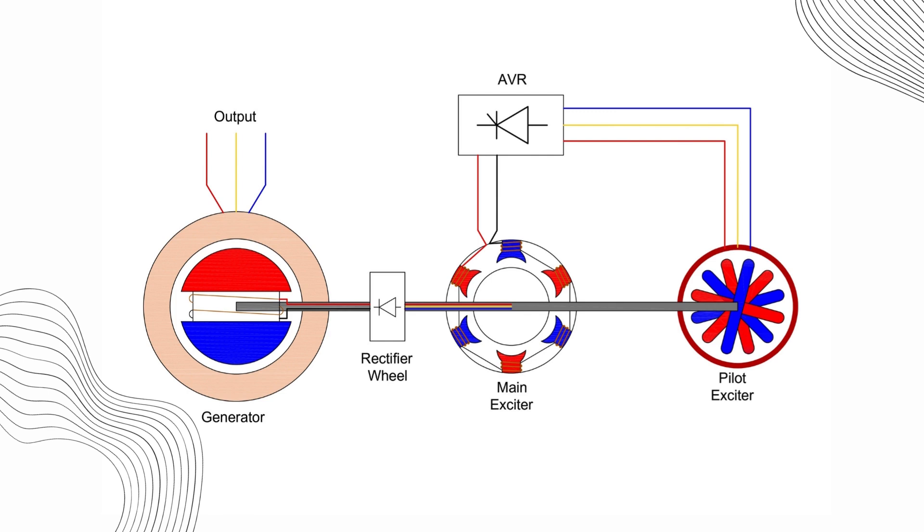The primary goal of an excitation system is to provide DC supply to the rotor winding. In a brushless system, this is achieved using two exciters: the pilot exciter and the main exciter.